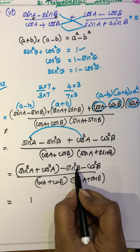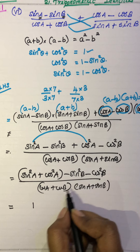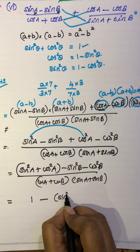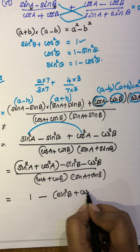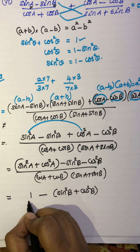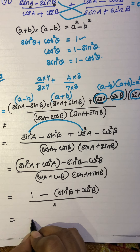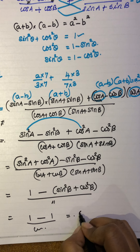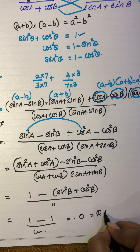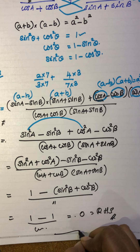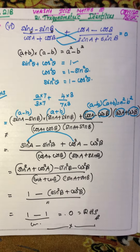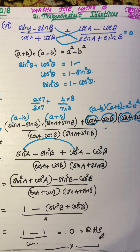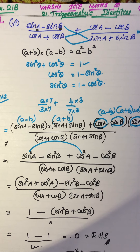For the B angle terms, we take the minus sign outside. Inside we get sin²B + cos²B, which is also equal to 1. So the numerator becomes 1 - 1 = 0, and we keep the denominator as it is. So we get 0, which is our RHS. We have proved the identity using both the algebraic identity and the trigonometric identity.